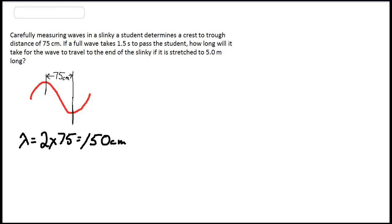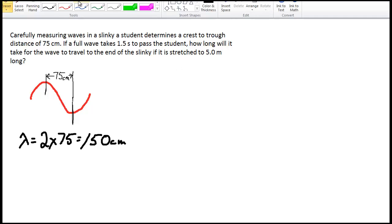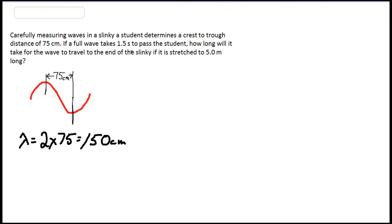It also tells us that it takes 1.5 seconds for one full wave to pass — that's the definition of the period of a wave. So capital T, the period of the wave, is 1.5 seconds.